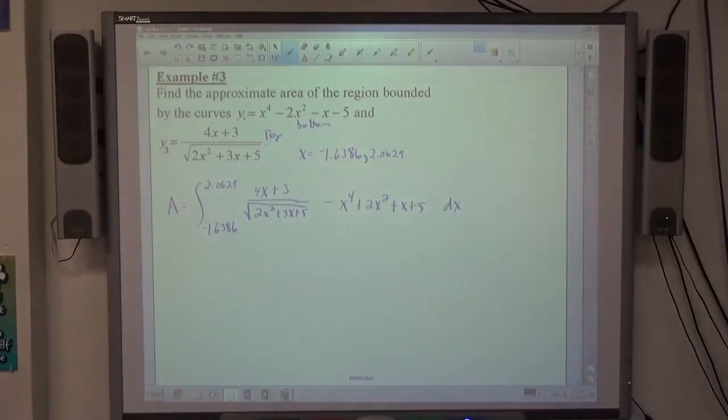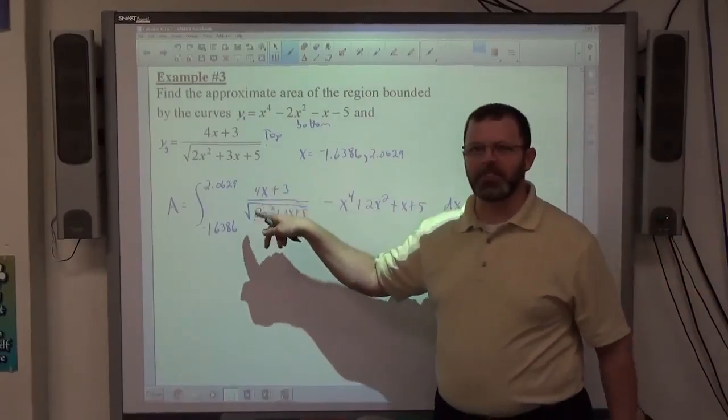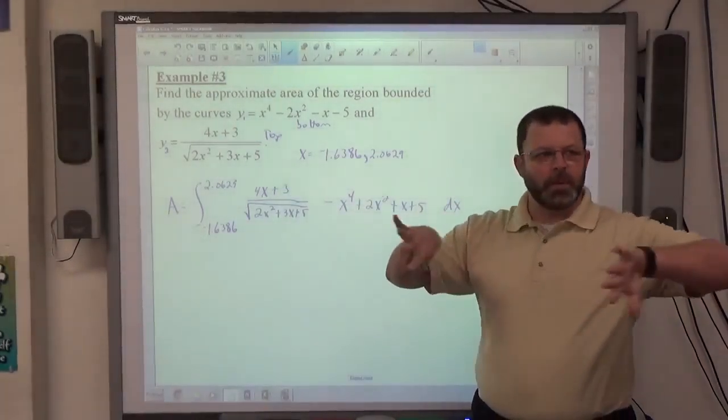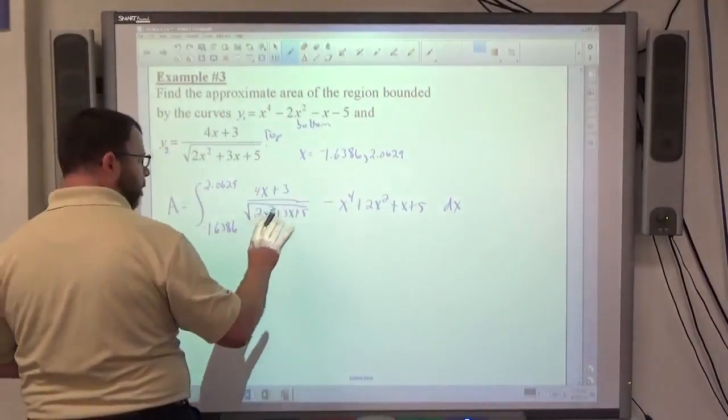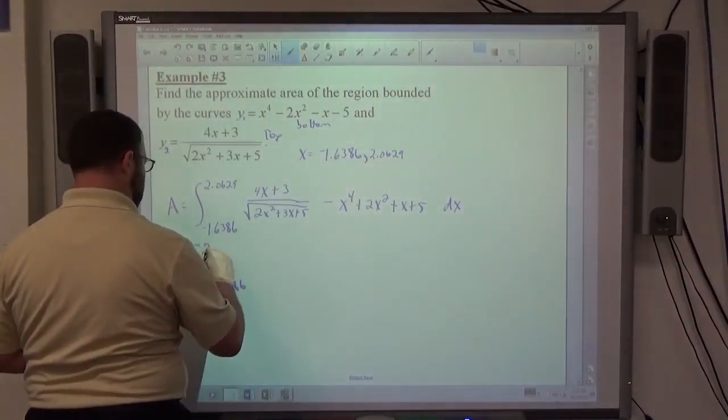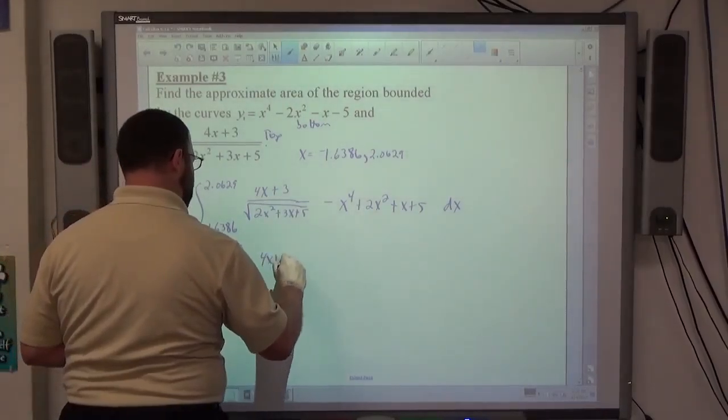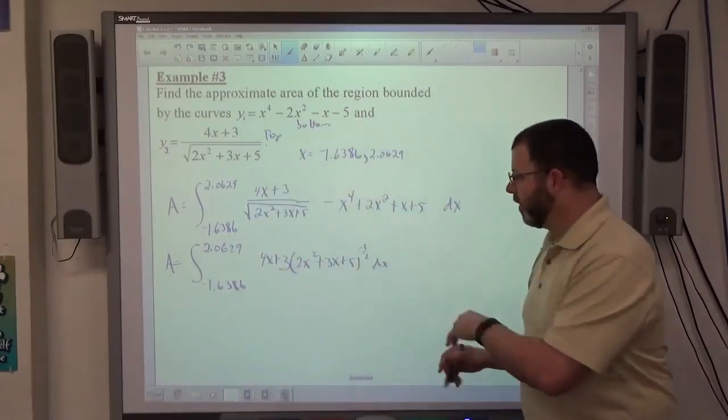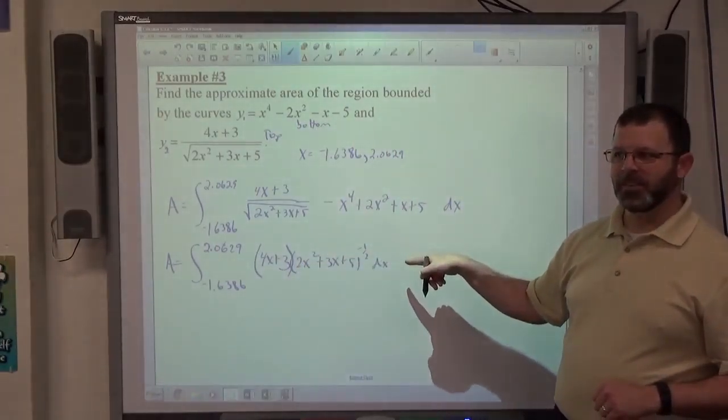To avoid that mistake I made in the last one, all I did was I distributed the minus sign through instead of putting minus up parentheses. Is there anything anybody's looking at right here that makes this problem look maybe a little more challenging than the other problem? That whole thing there, right? This term right here is pretty unfriendly, right?